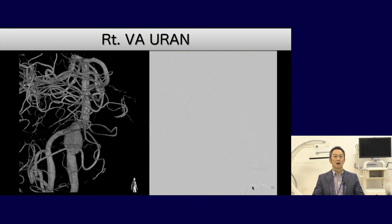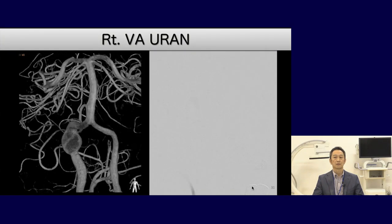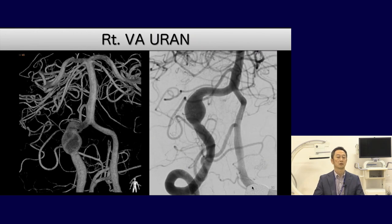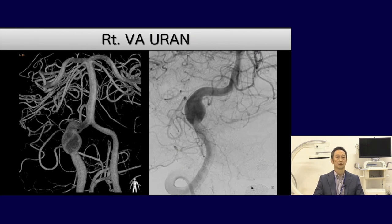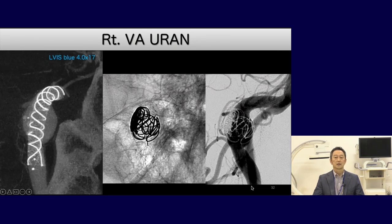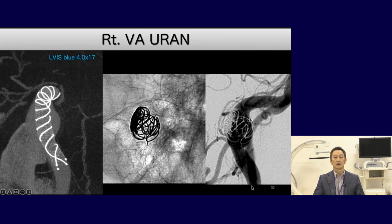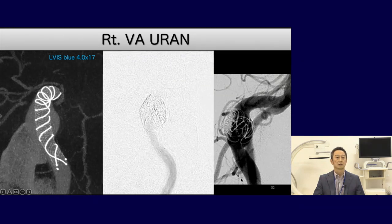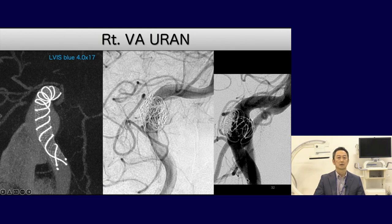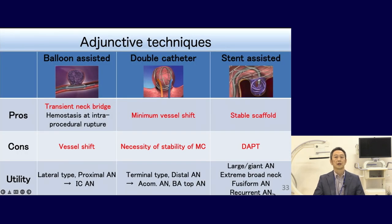This case is a right vertebral artery ruptured fusiform aneurysm causing facial spasm due to mass effect. I was concerned about worsening of facial spasm due to coil mass, so I performed LVIS Blue braided stenting with a small amount of coil embolization. Flow diverter is also a good option. Three-month follow-up angiogram demonstrated complete obliteration, because the LVIS braided stent has a flow diverting effect. I introduced three adjunctive techniques, which should be used properly for each situation.